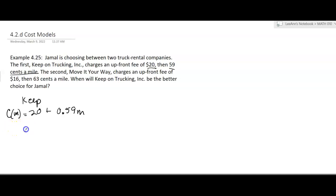Now I could rearrange this so that it says the cost based on the miles is going to be 0.59m plus 20. That would show it in the slope intercept form.